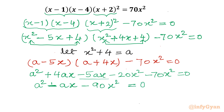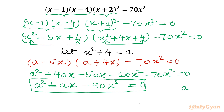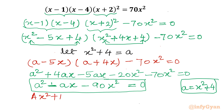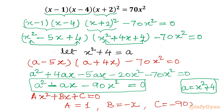I am going to treat this as a quadratic in a. Anyone can also view this as a quadratic in x. Now remember our substitution: a = x² + 4 — this will be very useful when we substitute back. Comparing with the standard form Aa² + Ba + C = 0, our coefficients are: A = 1, B = −x, and C = −90x².